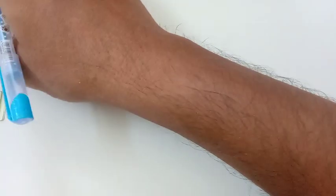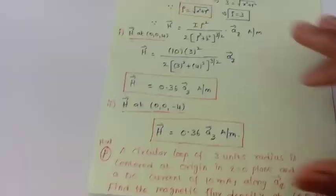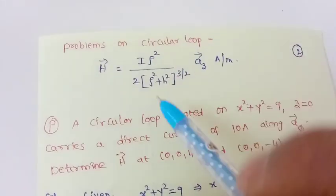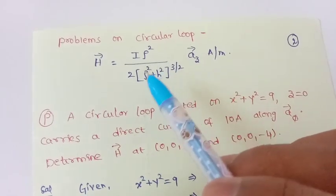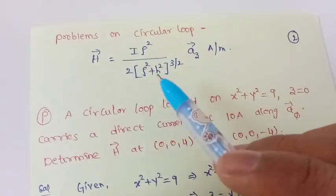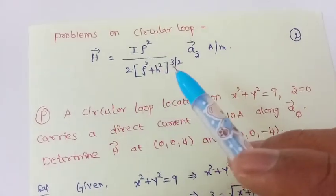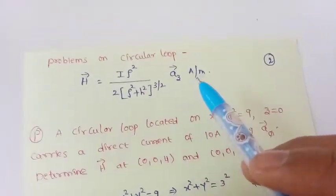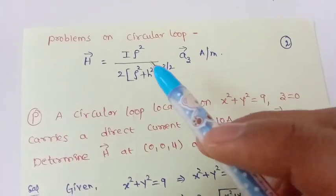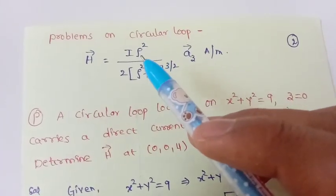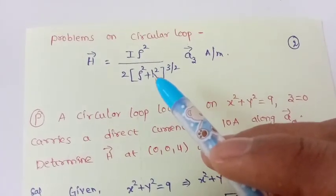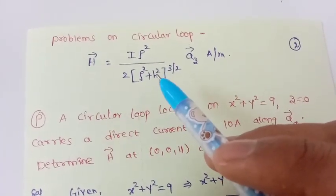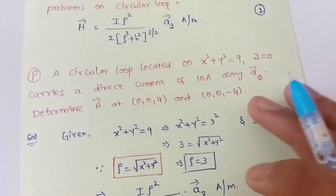Coming back to the problems on magnetic field intensity on a circular loop or circular coil. We know that H = Iρ²/[2(ρ² + h²)^(3/2)] along the z-direction in amperes per meter, where ρ is the radius of the circular coil and h is the distance from the coil or ring.